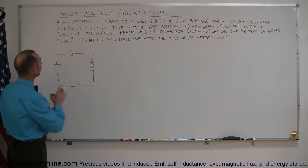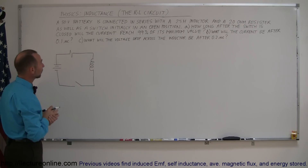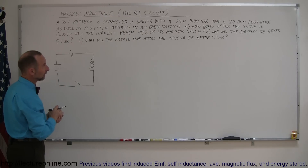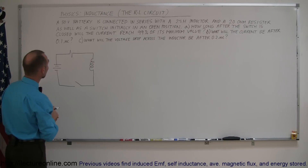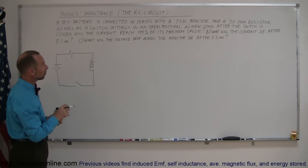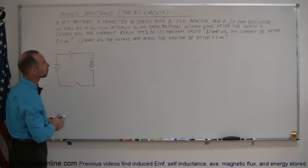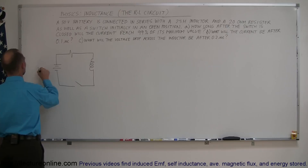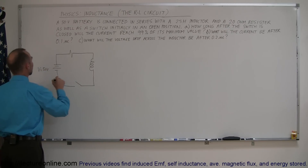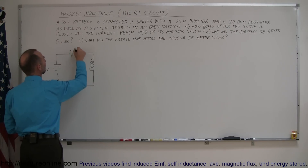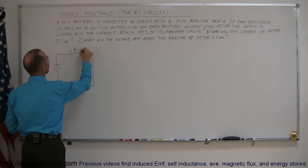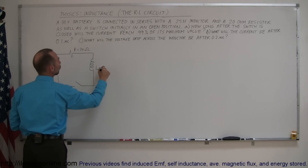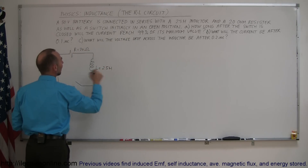In our particular example, we have a 50-volt battery connected in series with a 0.25 Henry inductor and a 20-ohm resistor, as well as a switch initially in an open position. So the voltage is 50 volts, resistance is 20 ohms, and inductance L is equal to 2.5 Henrys.